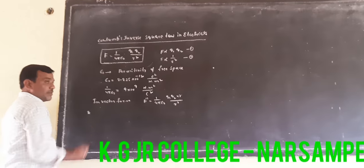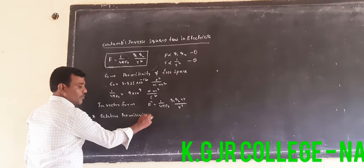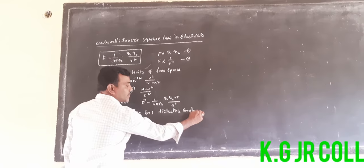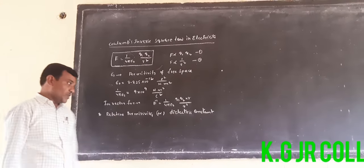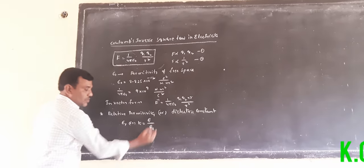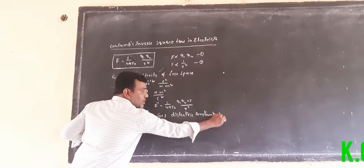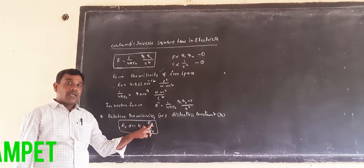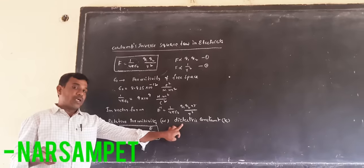Now, the important definition: relative permittivity, also called dielectric constant. The formula is K is equal to epsilon by epsilon naught, where epsilon is the permittivity of any medium and epsilon naught is the permittivity of free space. K is denoted as the dielectric constant. The ratio of permittivity of any medium to permittivity of free space is called relative permittivity or dielectric constant.